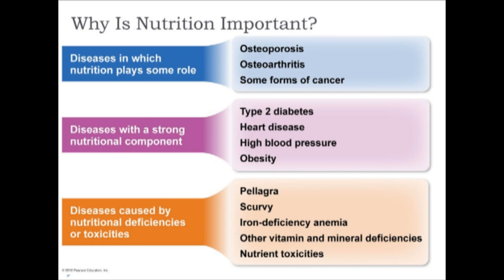Nutrition comes into play at different levels and intensities. There are diseases in which nutrition plays some role — osteoporosis, osteoarthritis, and some cancers. But there are diseases with strong nutritional components, very heavily associated: type 2 diabetes, heart disease, high blood pressure, and obesity. Then there are specific nutrition diseases such as pellagra, scurvy, iron deficiency anemia, other vitamin and mineral deficiencies, and nutrient toxicities — especially relevant when discussing supplementation or exaggerated supplementation.